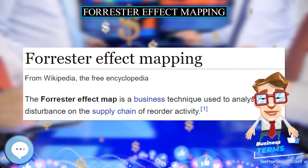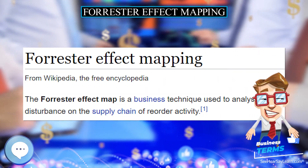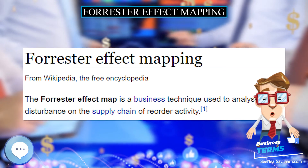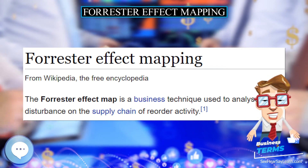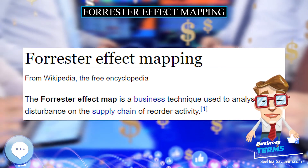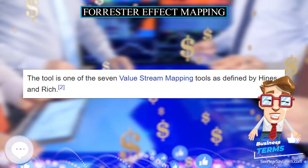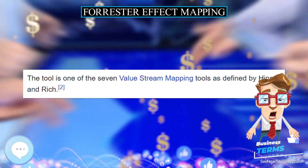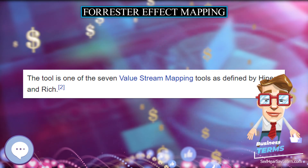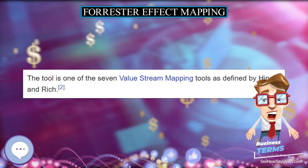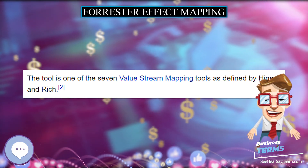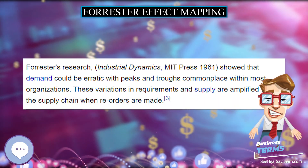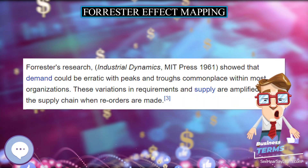Results. Distortion between inventory levels is shown as a result of poor communication and an inability to schedule accurately. The flatter the lines displayed, the leaner the system and the more accurate the forecast.